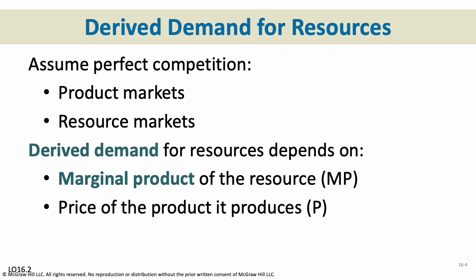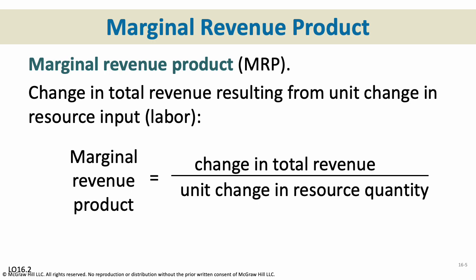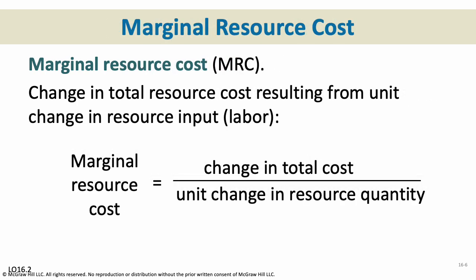The marginal revenue product is the change in total revenue resulting from a change in labor. If we add another worker or another machine, that goes on the bottom of our equation, and the change in total revenue goes on top. If our marginal revenue product is positive, it means adding an additional unit of labor is going to make us money — though it's not always going to be positive. Marginal resource cost is the change in total cost over the change in resource quantity. We keep adding units of labor as long as marginal revenue is greater than marginal cost.